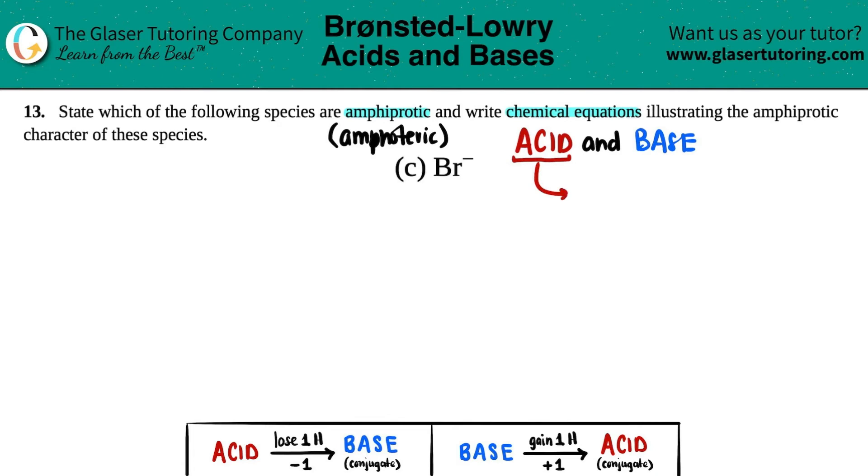The acid, remember, a Bronsted-Lowry acid always donates or loses one hydronium ion, aka H plus. But the thing is, if you're going to lose a hydrogen, you got to have it in the beginning.